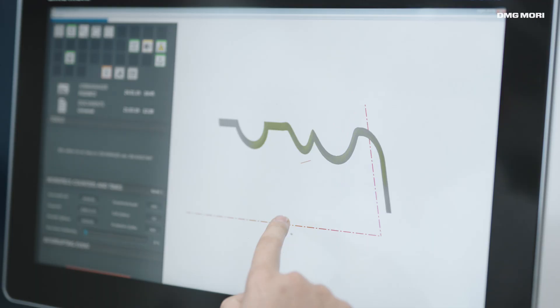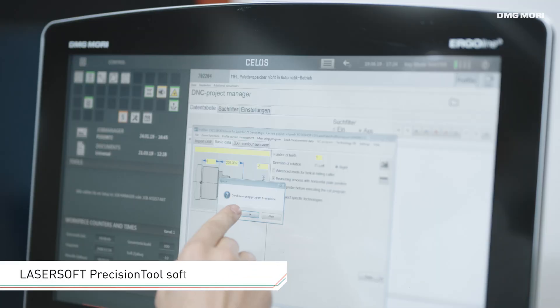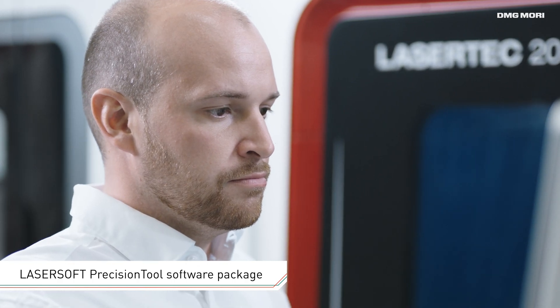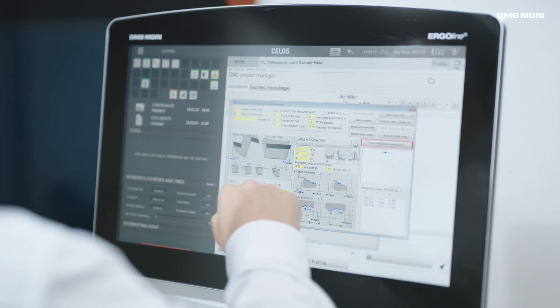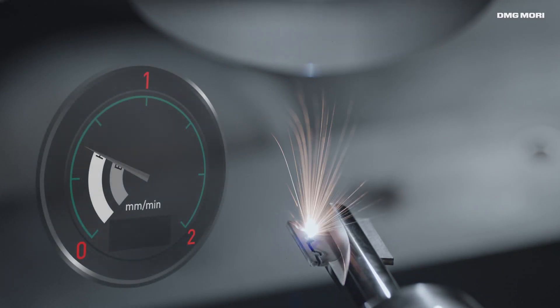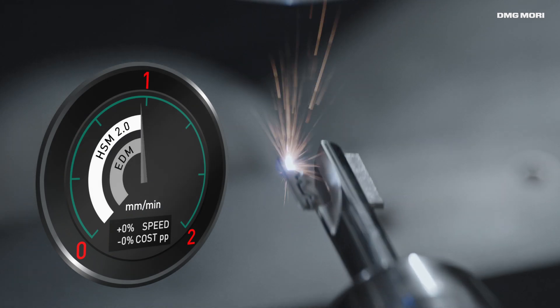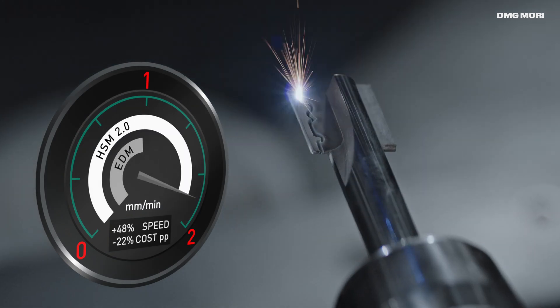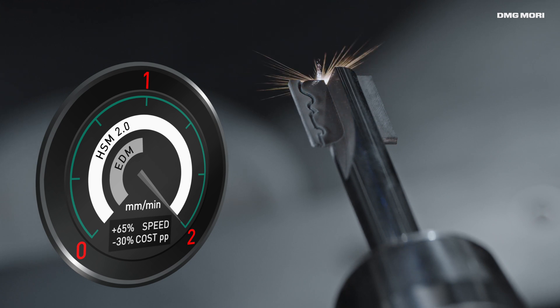User-friendly Lasersoft precision tool software packages make it easy to create CNC programs directly from 2D and 3D CAD data. The new high-speed mode 2.0 can increase the machining speed up to 2 mm per minute.